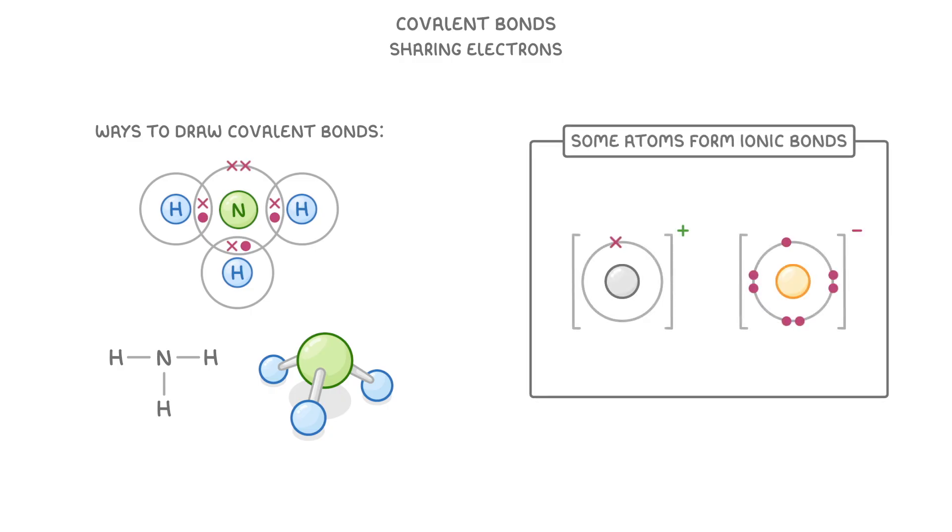Some atoms can form ionic bonds by transferring electrons from one atom to the other. This makes oppositely charged ions that are then attracted to each other through electrostatic forces which hold them together. The reason that they transfer these electrons is so they both get a full outer shell. This works great when one of the atoms has too many electrons and the other one has too few, like with sodium and chlorine.